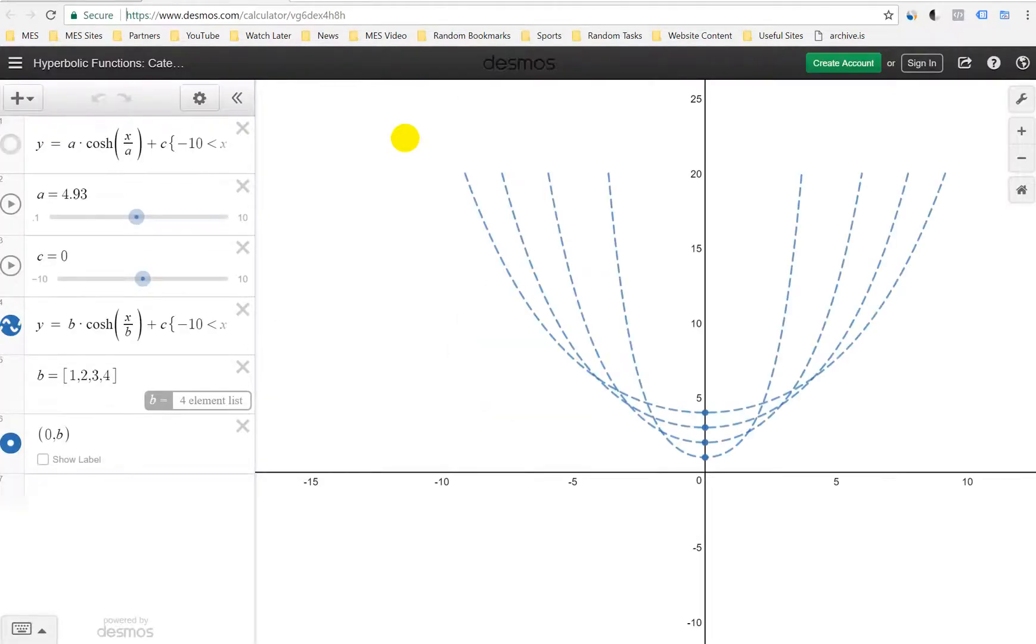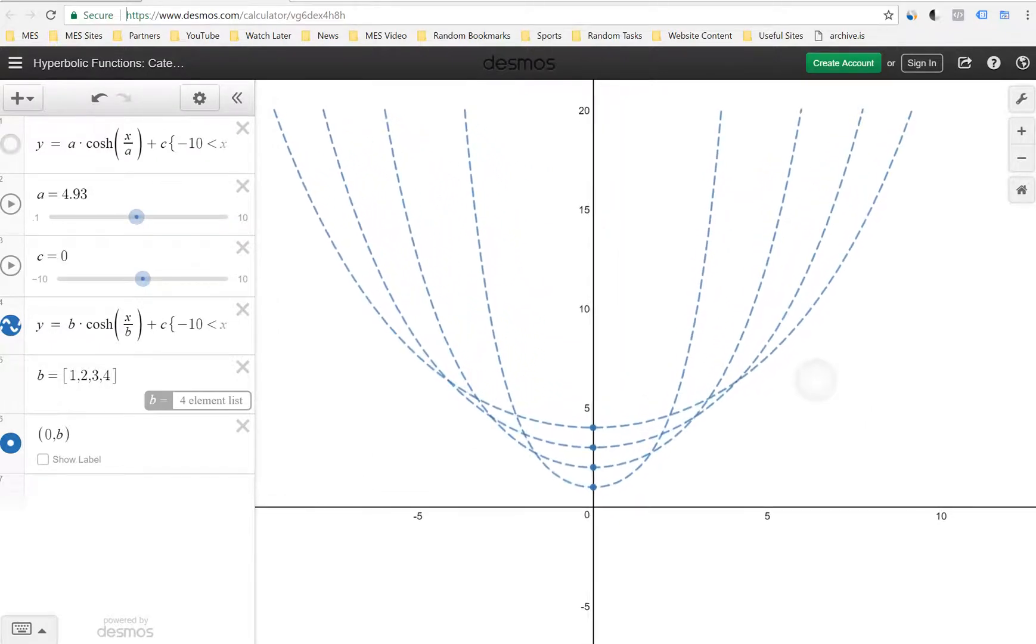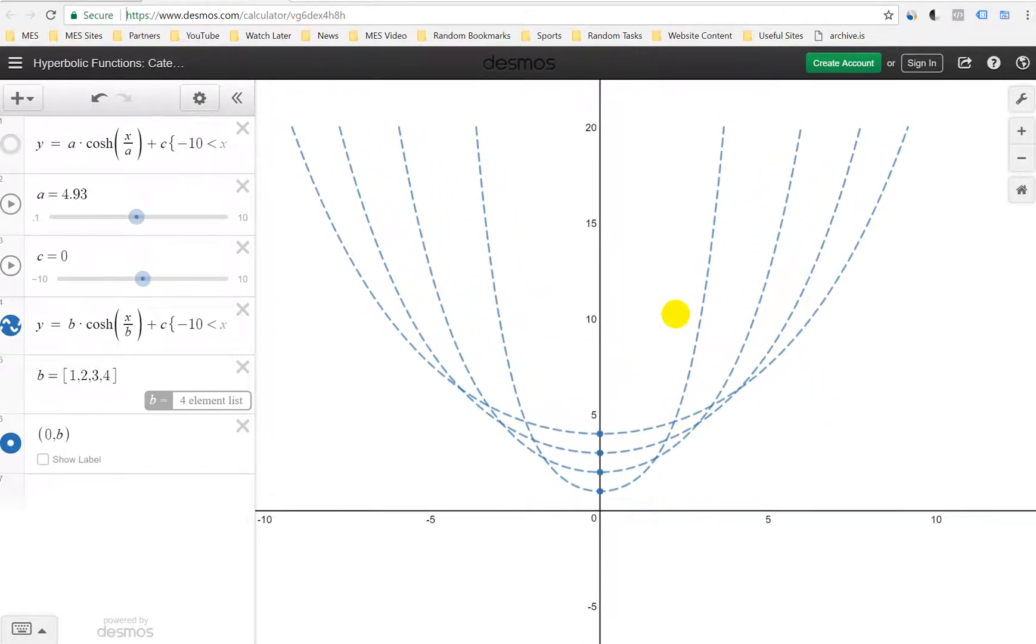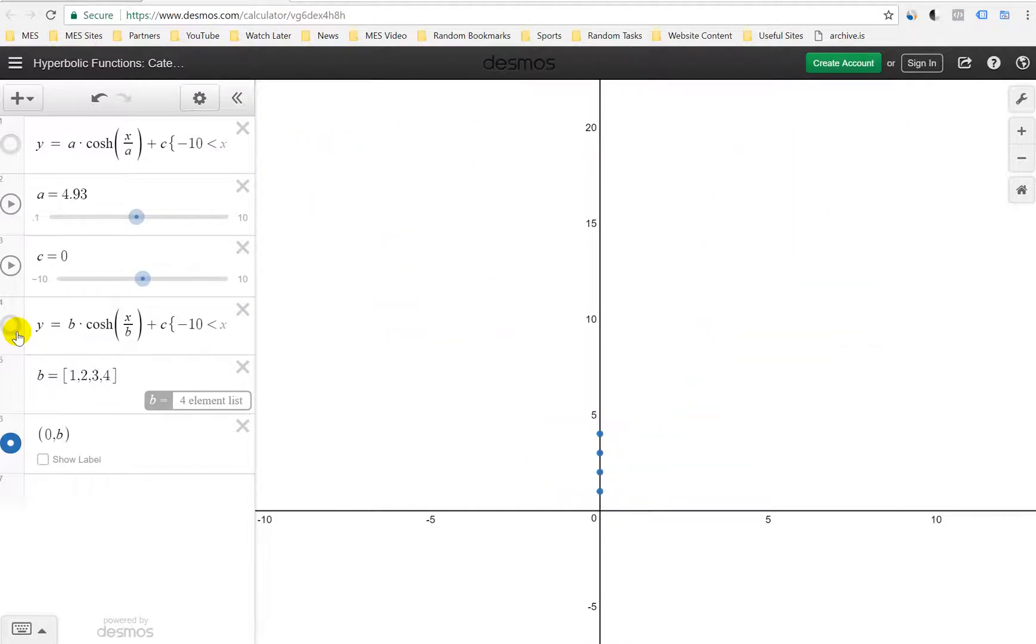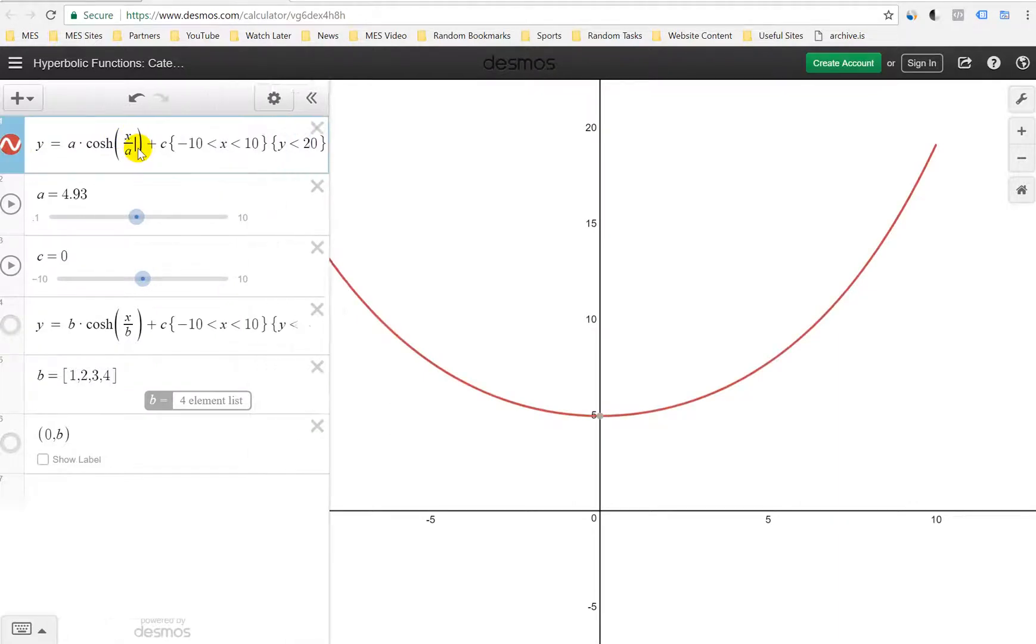So here's a bunch of catenary curves for different values of a. So what I'll do here is first I'm going to hide this, and then hide this, and then go here. Here is just the generic function, a cosh(x/a) plus c. And here I've also set the domain between the x's between negative 10 and 100.